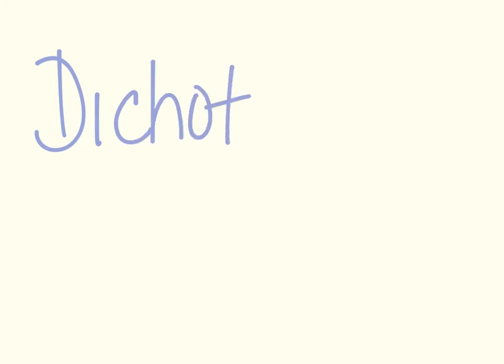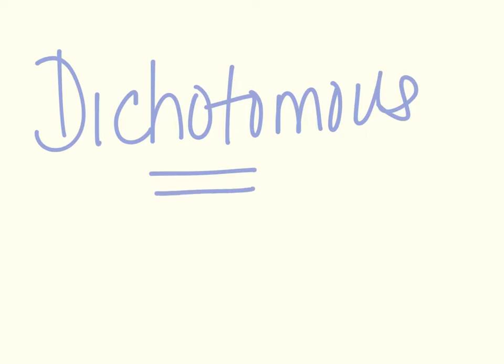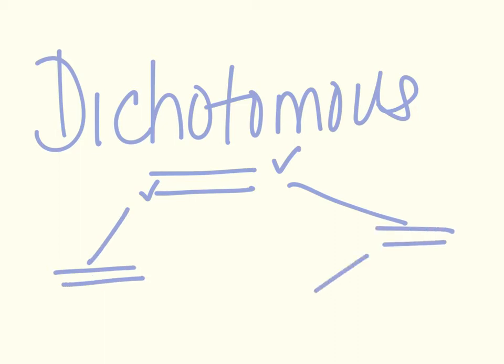Hopefully you learned something from the Amoeba Sisters video and the paper that went along with it. I just want to review a couple of things. The word dichotomous in dichotomous key actually means divided into two parts. So as you could see on the video, usually you have a choice — it'll ask you two questions, and if it's this one you go this way, and if it's this one you go this way. That is usually how dichotomous keys work.